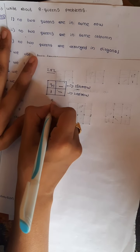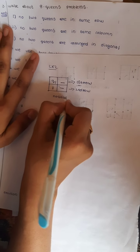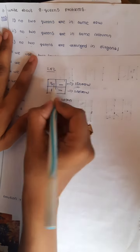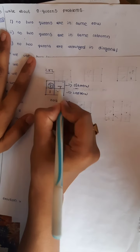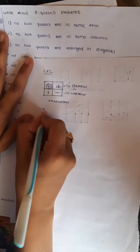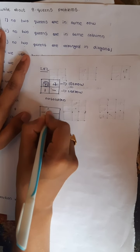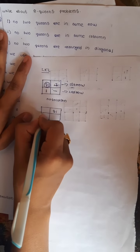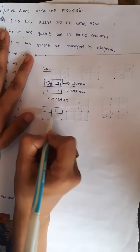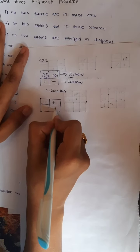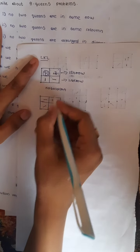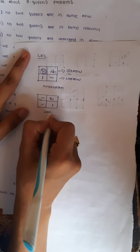There is no solution for the 2x2 case. We have to place Queen 1 in the other box and draw the box again. Checking the 3 rules again: this box, this box, and this box also cannot have Queen 2. So there is no solution for the 2x2 Queens problem.